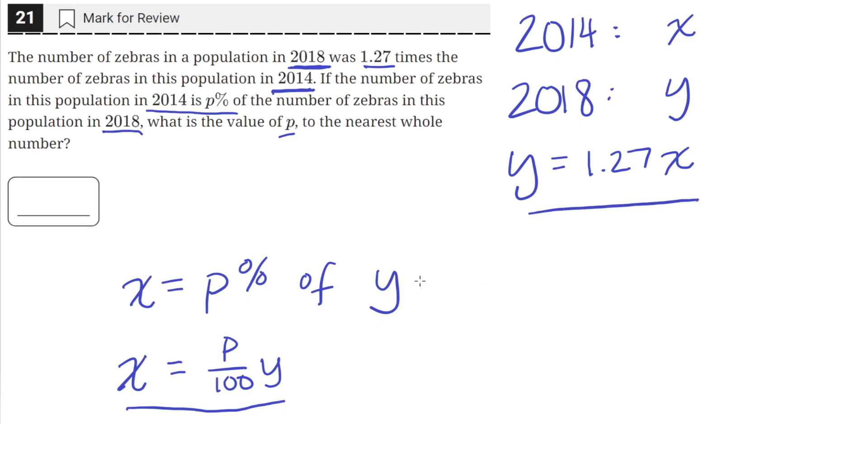And we can see that we can rewrite this equation with this value of y. So if we plug this in, we'll get that x is equal to p over 100, but instead of using just y here, we'll use this value of y, which says that y is 1.27 times x.